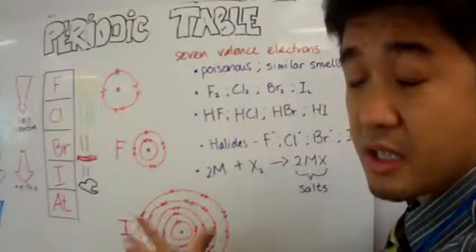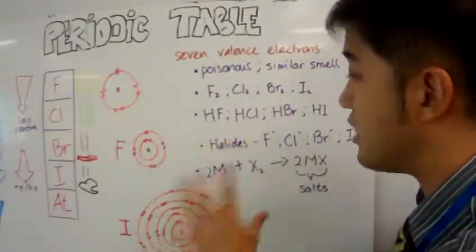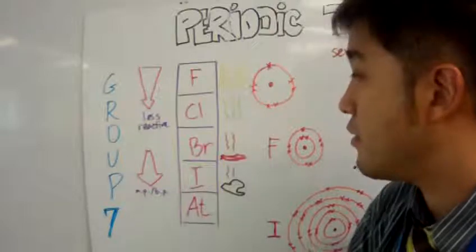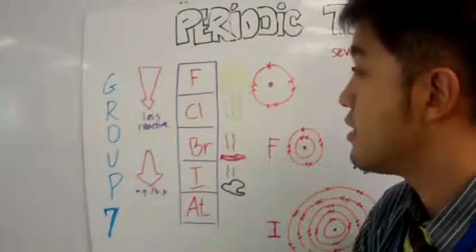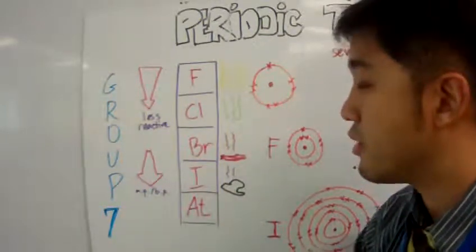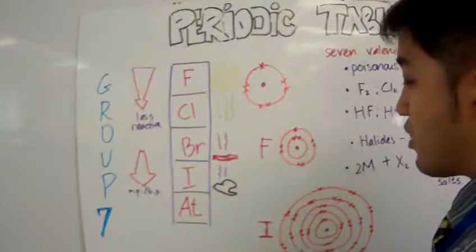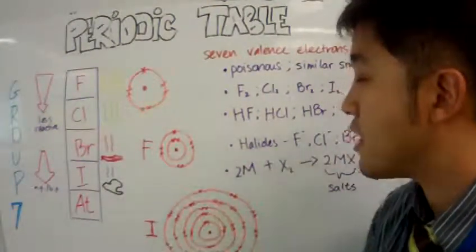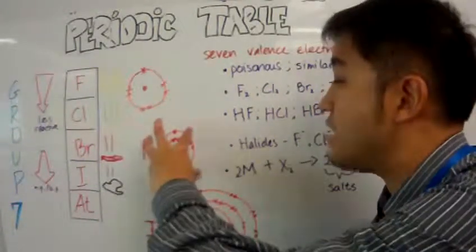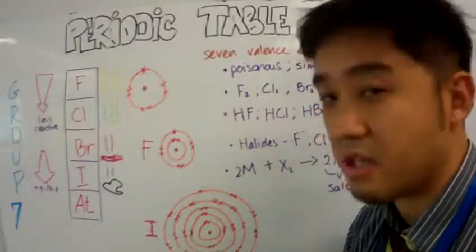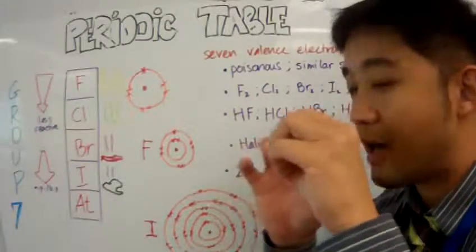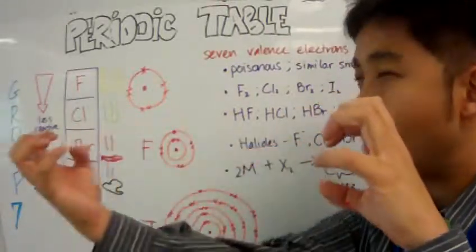The general trend of Group 7 elements is that when you go down the group, it becomes less reactive. If you look at the electron structure, you can see that fluorine is very reactive because it has only two shells.